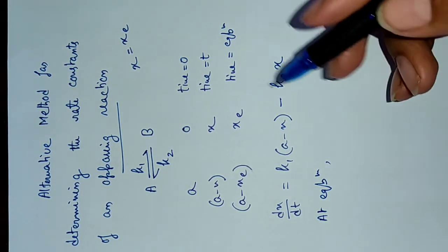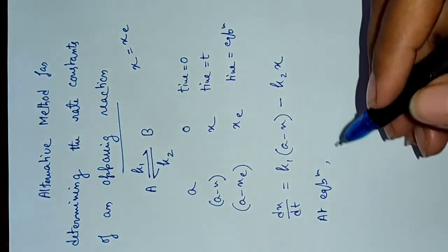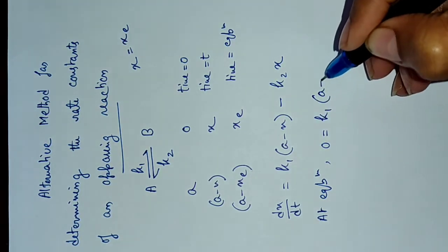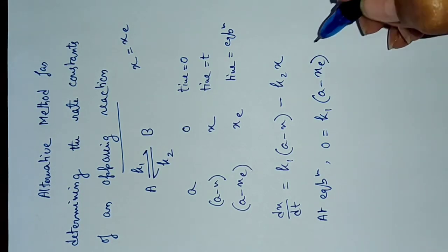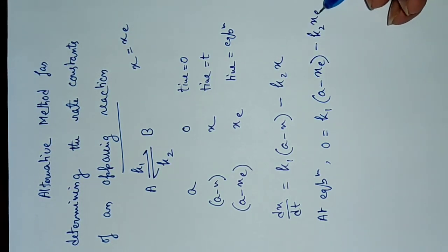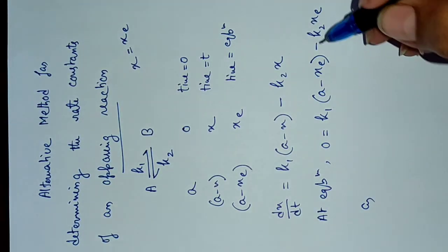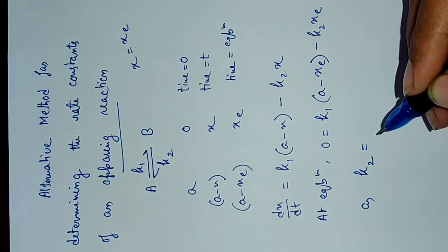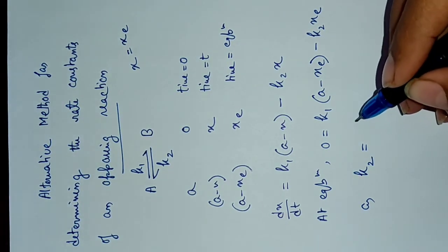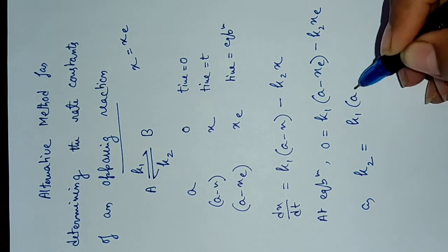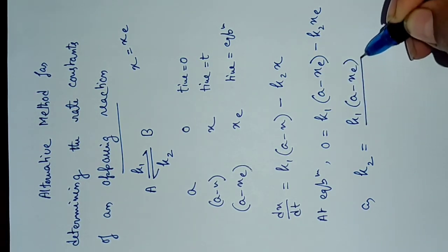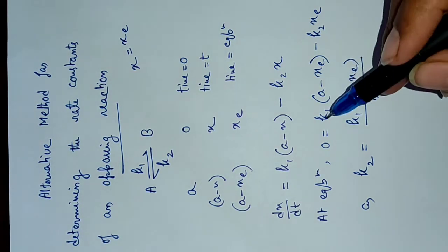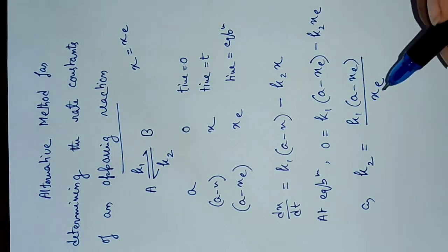At equilibrium, x equals x_e and the rate is zero, so we can write: 0 = k1(a - x_e) - k2·x_e. Rearranging to find k2, we get k2 = k1(a - x_e) / x_e.